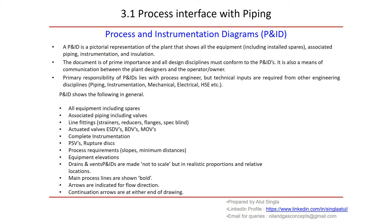The next very important document is the process and instrument diagram — P&IDs. This is the basis for piping layout design. A P&ID is a pictorial representation of the plant that shows all the equipment, associated piping, instrumentation, and installation. The document is of prime importance and all design disciplines must conform to the P&IDs. It is also a means of communication between plant designer and operator or owner. Primary responsibility of P&IDs lies with the process engineer, but technical inputs are required from other disciplines — piping, instrumentation, mechanical, electrical — all disciplines contribute to this basic document.